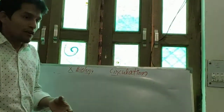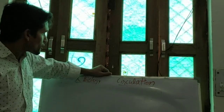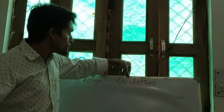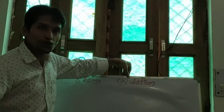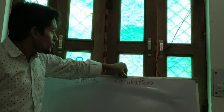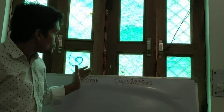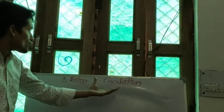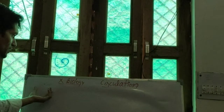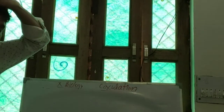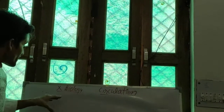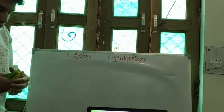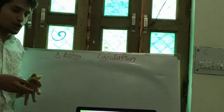Good morning students. Welcome once again in 10th standard biology. Yesterday we had discussed about the meaning of transportation and circulation. Today we will discuss about the more elaborate study of circulation. In circulation there are three parts: blood vessels and the human heart. Yesterday we discussed about blood and blood vessels. Today we will discuss about the human heart.